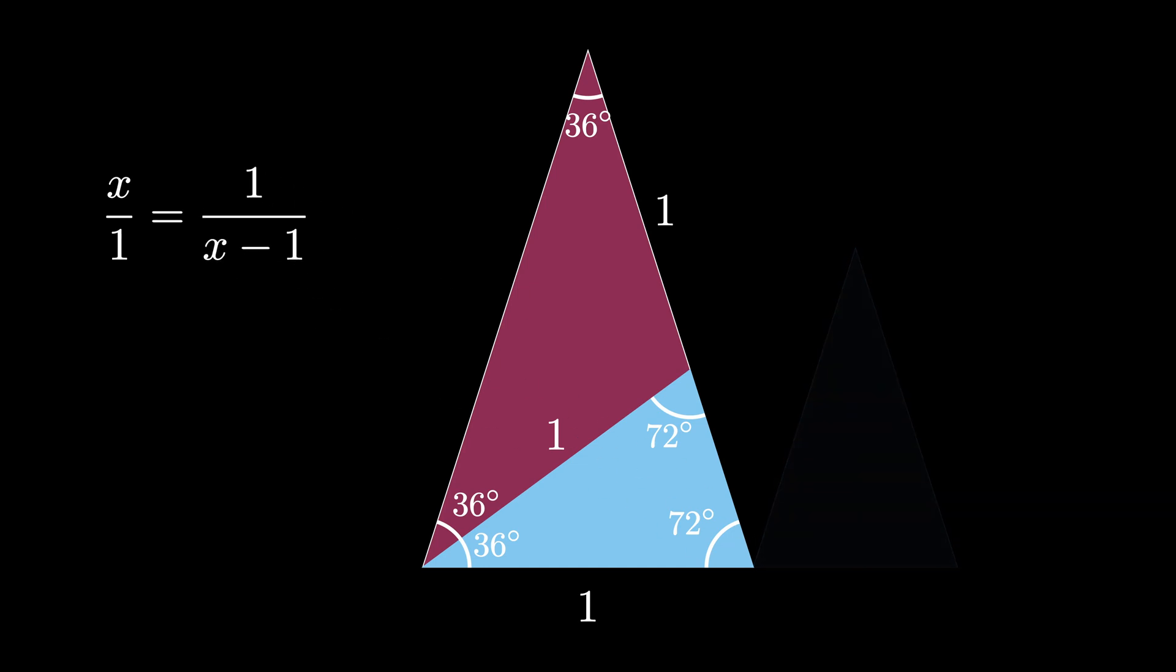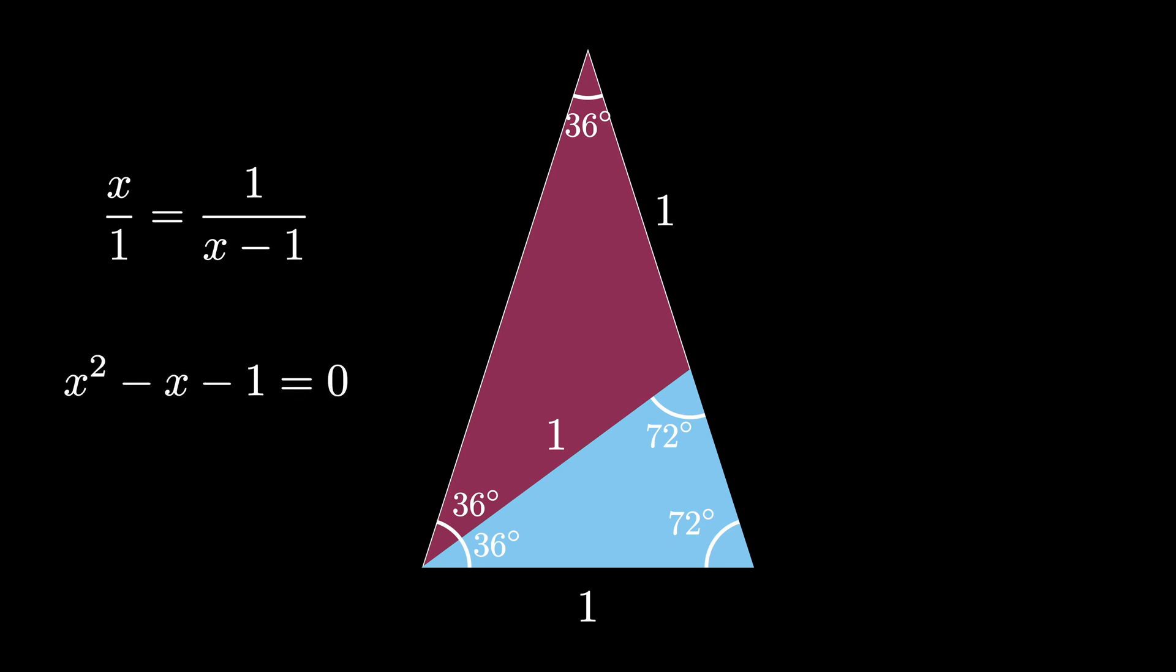And from this equality, we can clear denominators to conclude that x squared minus x minus 1 is equal to 0. From this equation, we have one positive root, which is x equals 1 plus the square root of 5 over 2.